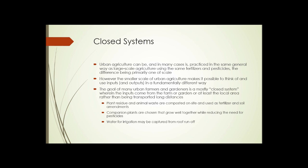Closed systems. This is becoming more and more of a buzzword in agriculture these days. Urban agriculture can be, and in many cases is, practiced in the same general way as large-scale agriculture, using the same types of fertilizers and pesticides, the difference being primarily one of scale. However, the smaller scale of urban agriculture makes it possible to think of and use inputs and outputs in a fundamentally different way than large-scale agriculture.